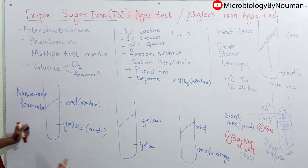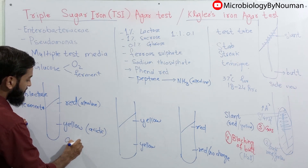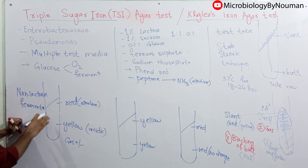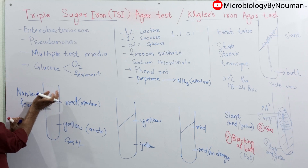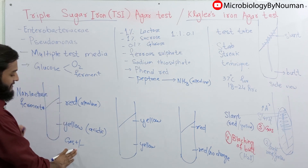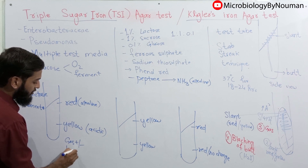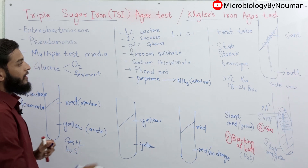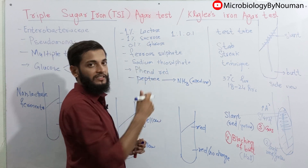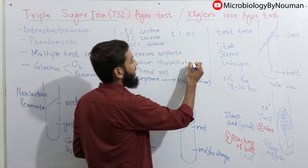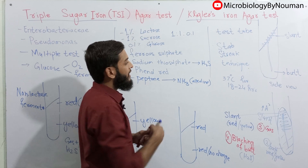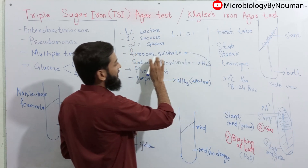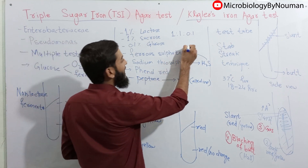Other than red slant and yellow butt, certain bacteria can also produce gas. The gas is seen in the form of cracks in the media, or as air trapped in the media, or sometimes the gas is trapped in the lower portion and the whole media is pushed in the upward direction. Other than gas, hydrogen sulfide is also produced by certain bacteria. Sodium thiosulfate present in the media is broken down into hydrogen sulfide. Hydrogen sulfide is a colorless product that reacts with ferrous sulfate, turning the media black.